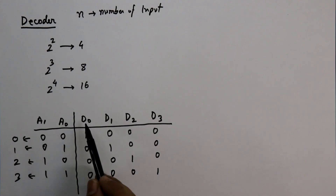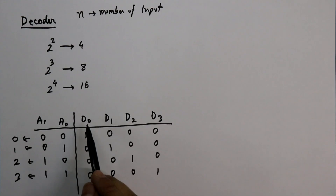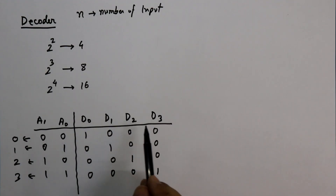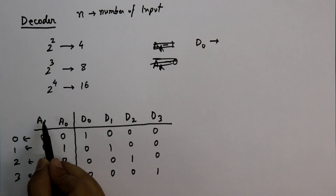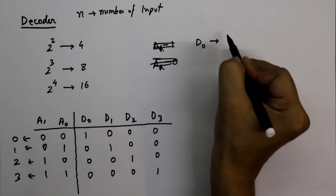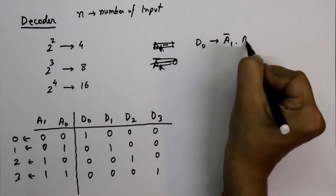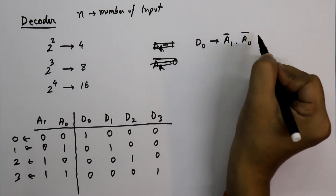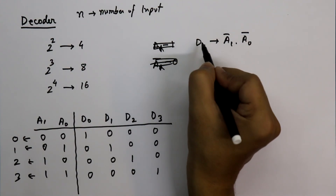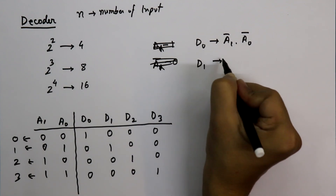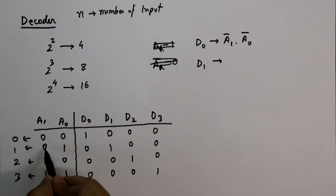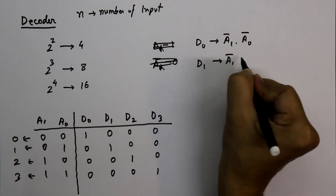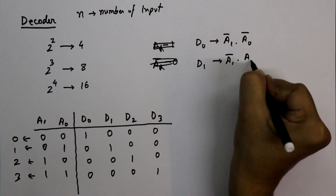To design the decoder circuit we need output equations — we have to find what the equation will be for D0, D1, D2, and D3. For D0, 00 means A1 complement dot A0 complement. For D1, A0 is 1 and A1 is 0, so the equation is A1 complement dot A0.